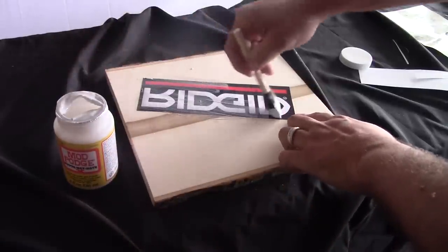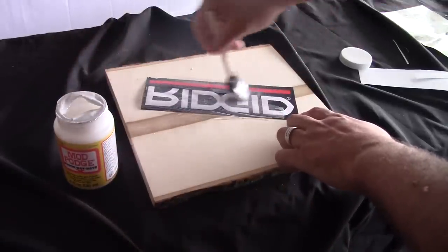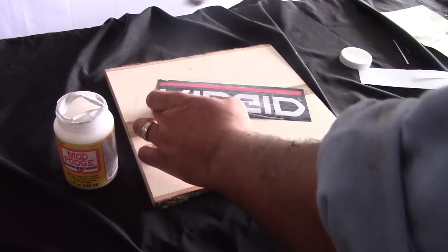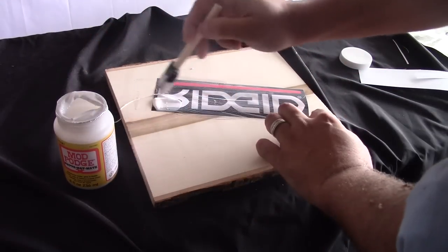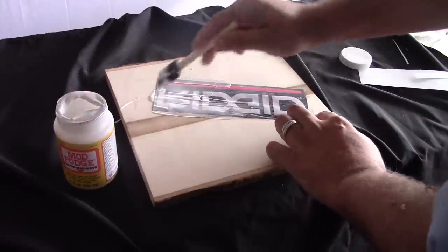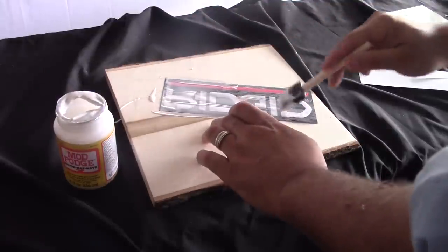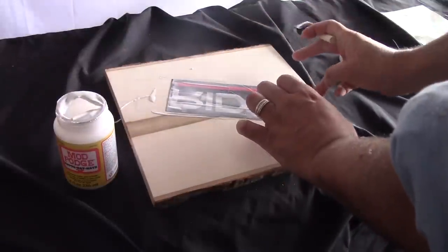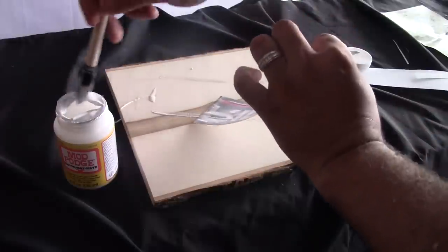When you go to take this paper off towards the end you're going to end up with missing pieces of the picture and it's just not going to look very good. So you got to make sure that you apply this pretty heavy. And then after I apply it on the picture itself I'll put some on the board, and that way I know for sure that it's going to stick.